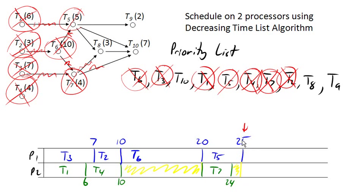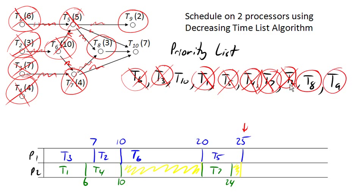Here at time 25, task five gets completed. With that completed, those requirements go away and task eight and task nine both become ready — all of their requirements have been completed. So we can go ahead and start on eight and nine. We'll assign task eight, the first on the list, to processor one, bringing us out to time 28. And we'll assign task nine, the second one, to processor two, which will take us out to time 27, because this was time 25 and task nine's time is two.